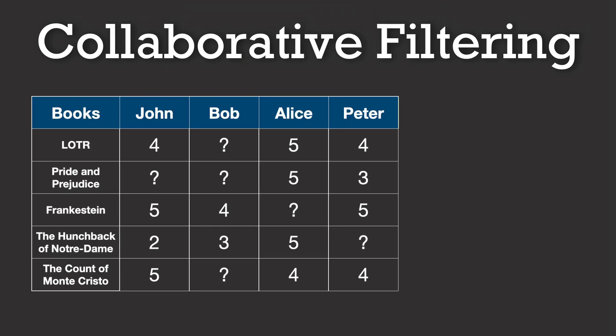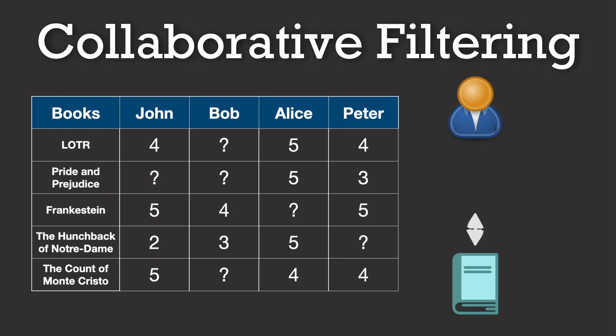The basic idea behind collaborative filtering is that we don't need these manually made features for our items. Instead, we can model user preferences and item characteristics purely based on observed interactions.